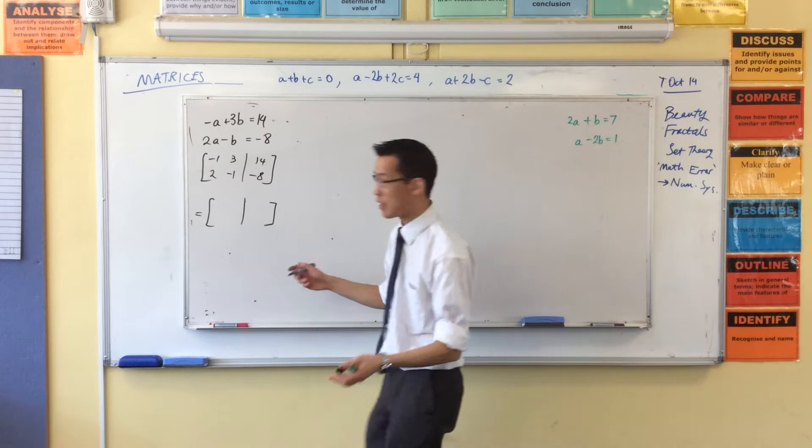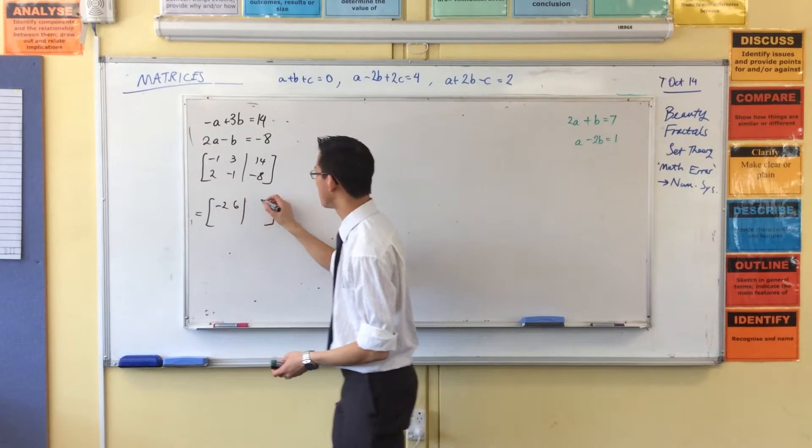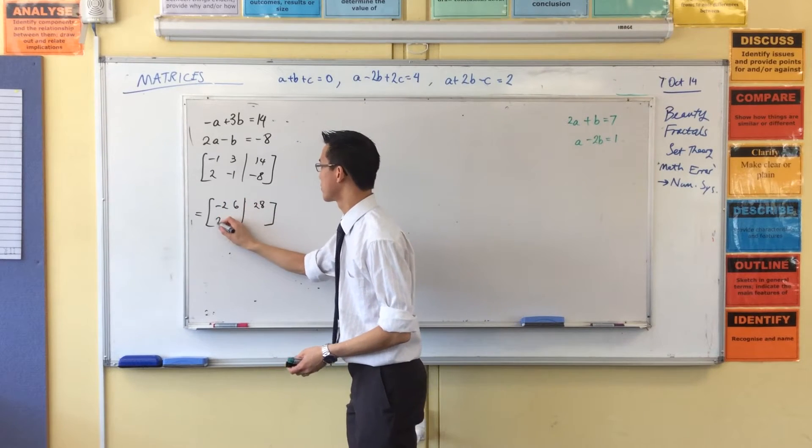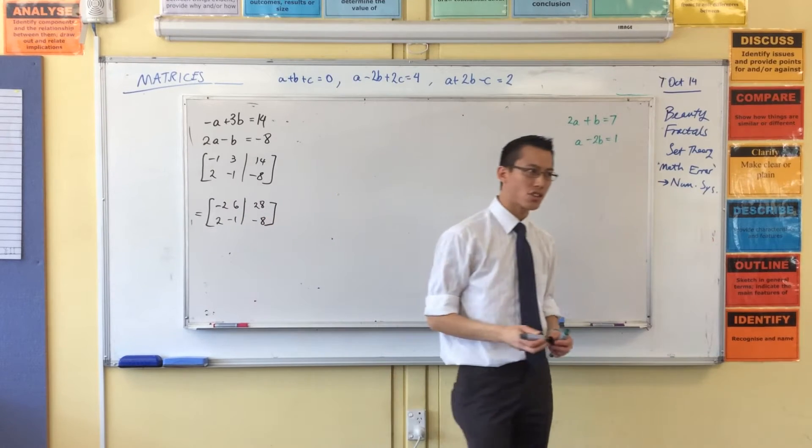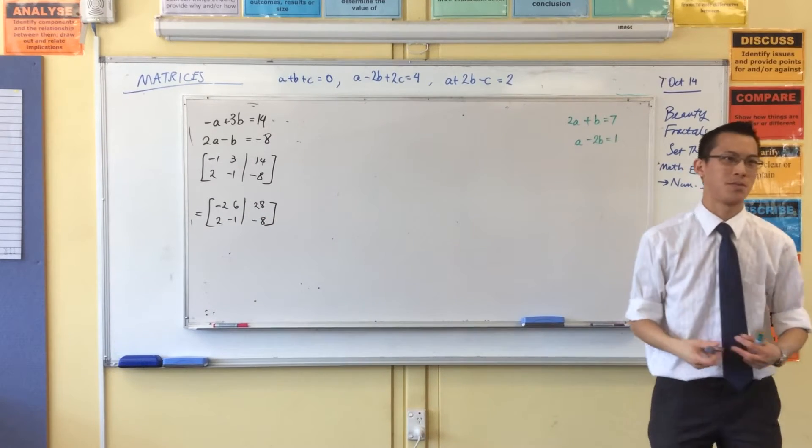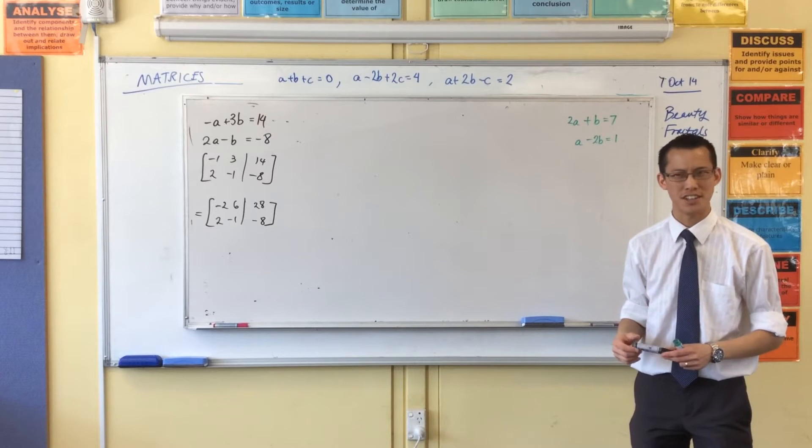Take the top row and multiply it by two. I think that's a good call. Why is that such a good idea? Why is it so efficient is a better question.